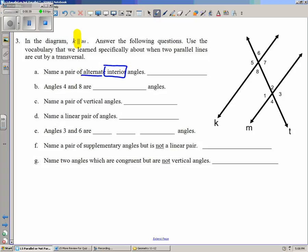So, for example, if I took angle 8, angle 2 would be alternate interior because they're both inside the parallel lines and they're on opposite sides of the transversal. So 8 and 2 is one pair. There is another pair, namely 7 and 1, and those would both be acceptable answers.